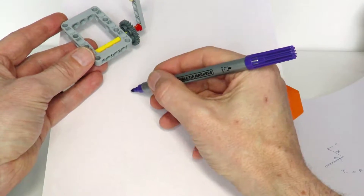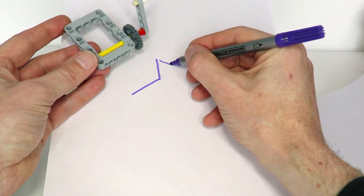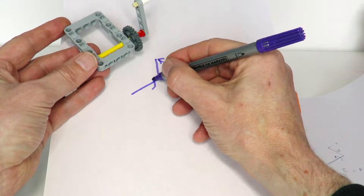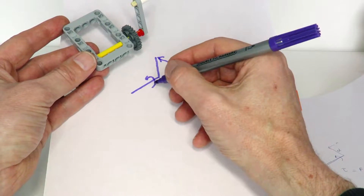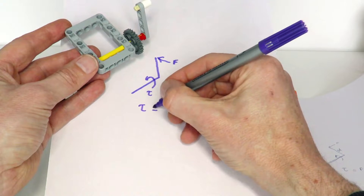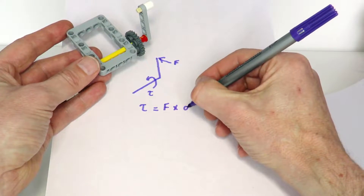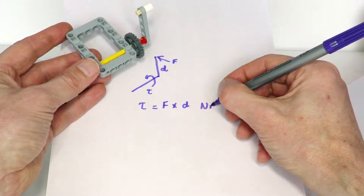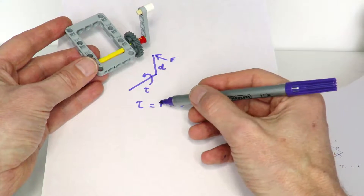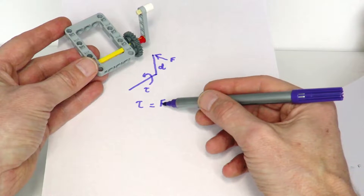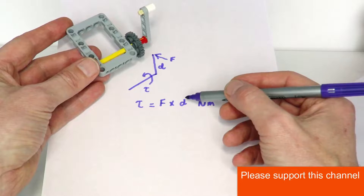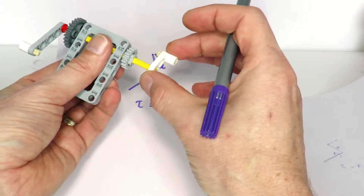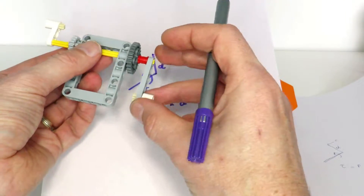Looking at the formal definition of torque: if we draw this crank handle, we're applying a certain amount of force F to the handle at a perpendicular angle to the crank. The axle is going to rotate and will have a certain amount of torque on it. That torque is defined as the force times the distance, where the distance d is from the axle to the point where the force is being applied, measured in Newton-meters. So you can see you can get the same torque by applying a smaller force to a larger distance, or a larger force to a smaller distance.